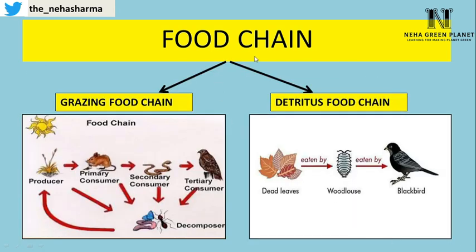Food chains are of two types: grazing food chain and detritus food chain. The grazing food chain starts from sunlight — sunlight is consumed by the producer, and from the producer energy is transferred into the primary consumer, then to the secondary consumer, and finally to the tertiary consumer. On the other hand, detritus food chains start from dead organic matter, for example dead leaves. These dead leaves are eaten by insects like woodlice, and then these insects are further consumed by a blackbird or any other organism.